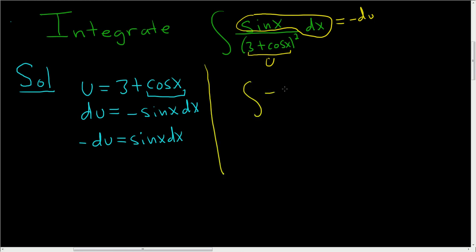So this will be negative du over u squared. You can pull out the negative 1, and bring this upstairs, write it in a way that lets you integrate.